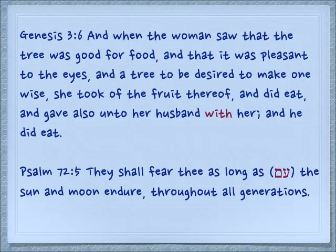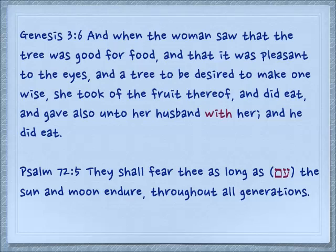Genesis 3:6 — and when the woman saw that the tree was good for food and that it was pleasant to the eyes and a tree to be desired to make one wise, she took of the fruit thereof and did eat, and gave also unto her husband with her, and he did eat. In Psalm 72:5, they shall fear thee as long as the sun and moon endure throughout their generations. In other words, we don't fear the sun and moon — this is the preposition used in this case. Prepositions in other languages are very tricky; they are specific to verbs and don't translate well from language to language.